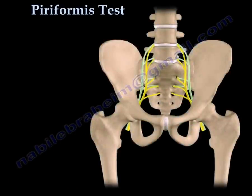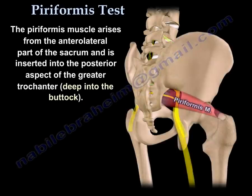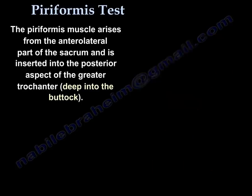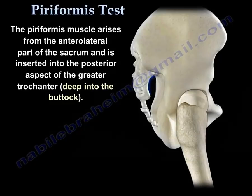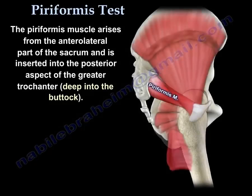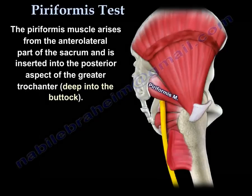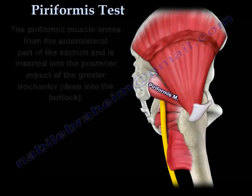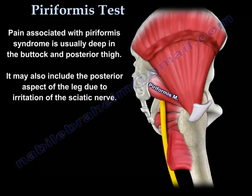Let's talk about the pariformis syndrome and pariformis test. The pariformis muscle arises from the anterolateral part of the sacrum and is inserted into the posterior aspect of the greater trochanter, deep into the buttock.